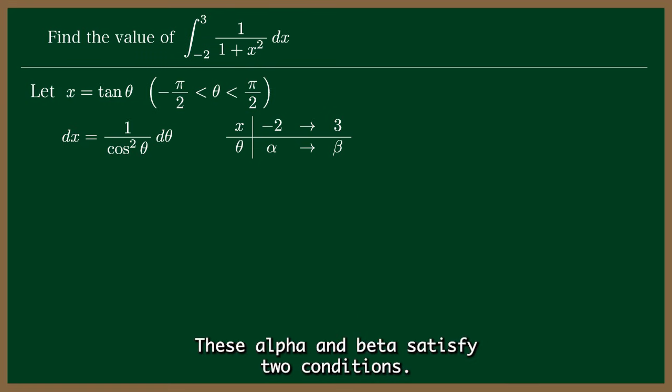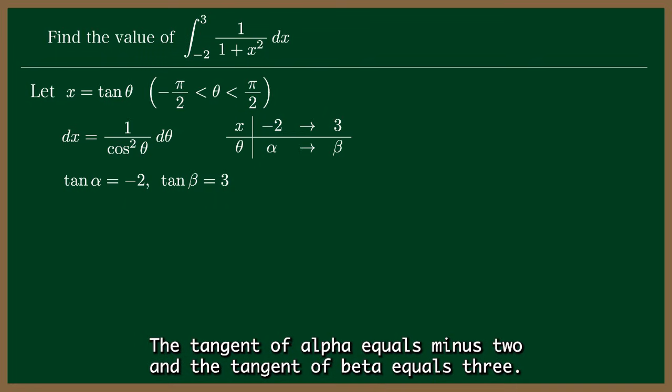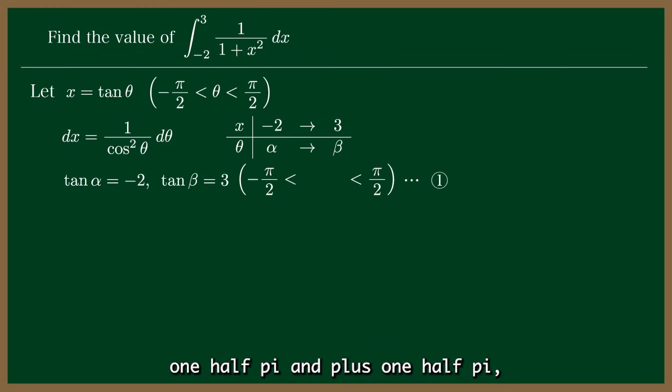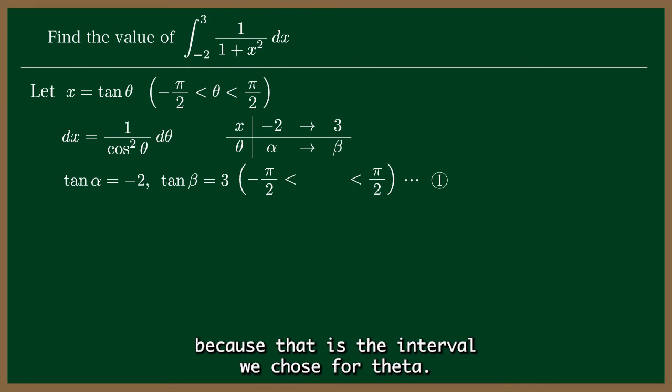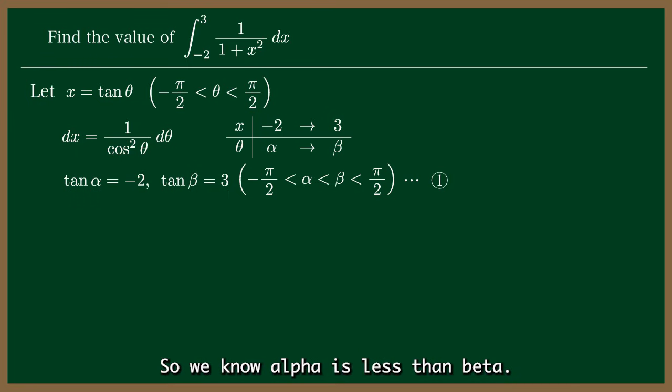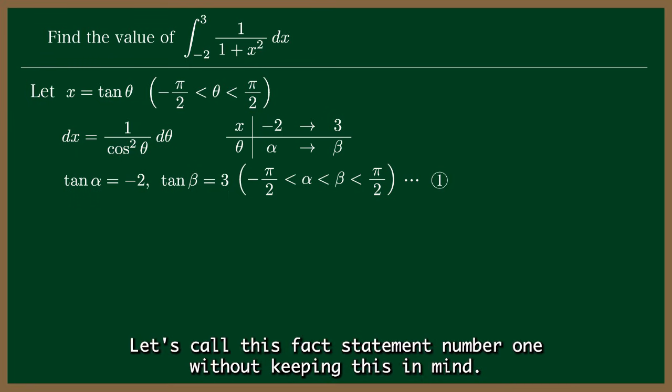These alpha and beta satisfy two conditions. The tangent of alpha equals minus 2, and the tangent of beta equals 3. Both alpha and beta lie strictly between minus 1 half pi and plus 1 half pi, because that is the interval we chose for theta. On top of that, the tangent function is increasing on this interval. So we know alpha is less than beta. Let's call this fact statement number 1.